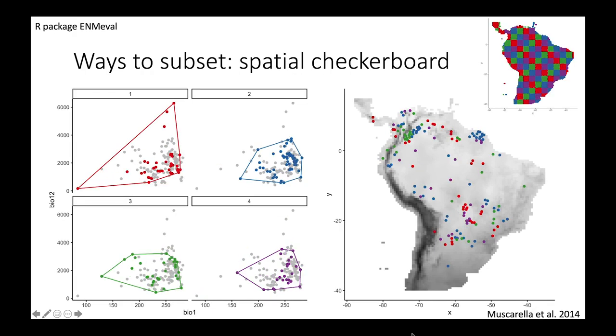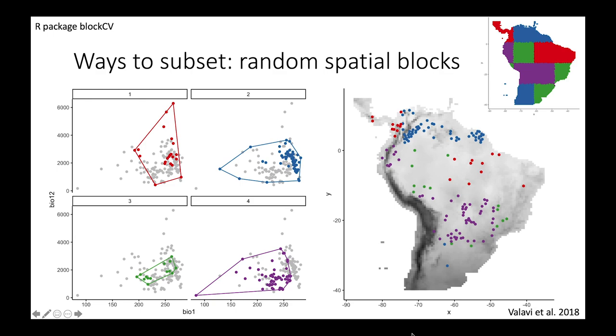The previous three were done with the package ENMeval. This one is done with another great package called blockCV. The reference is on the bottom right. This allows for a lot more different kinds of block subsetting than we had in ENMeval, and it extends it quite a bit. This one is random spatial blocks. You define the block size. However, the way they are laid out is random. So this is something you could iterate multiple times similar to the random subsetting, except that it is also spatial. One potential issue here is that the sampling of occurrence points across subsets is not equal all the time. However, iterating multiple times should relieve that problem.